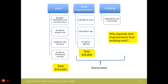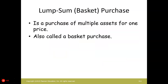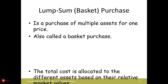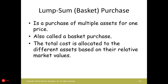Now let's look at another type of issue that may occur — it's called a lump sum purchase. This is what happens when a company buys a whole bunch of assets for a price that's less than the fair market value of what was received. We have to allocate the cost based on the fair market value of what was received, and we do this by using a weighted average.